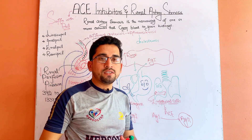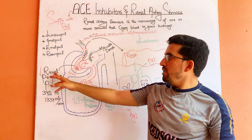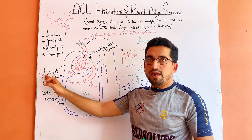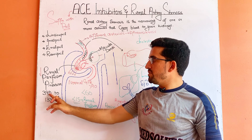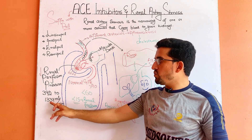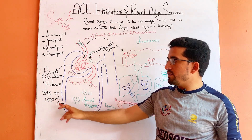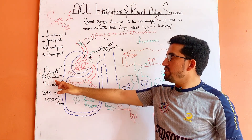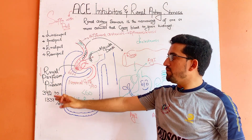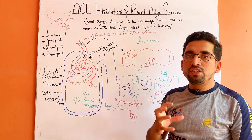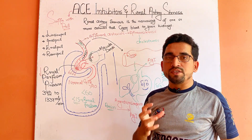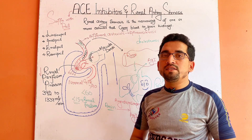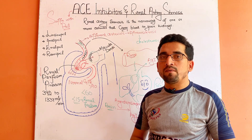Due to this blockade, the renal perfusion pressure is reduced. Normal renal perfusion pressure is 392 to 1337 ml per minute. Due to this decrease in renal perfusion pressure, the GFR is also reduced, and through the GFR we can determine the condition of our kidney.